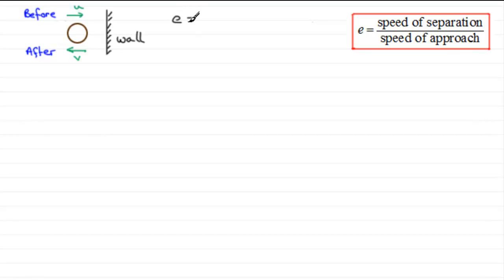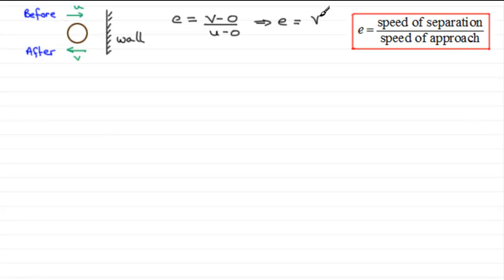E will be equal to the speed of separation divided by the speed of approach. The speed of separation is V minus zero, since the wall is at rest, and the speed of approach is U minus zero. So it follows that E equals V divided by U — the speed of rebound divided by the speed of approach. Multiplying both sides by U, the speed of rebound is always equal to E times the speed of approach.